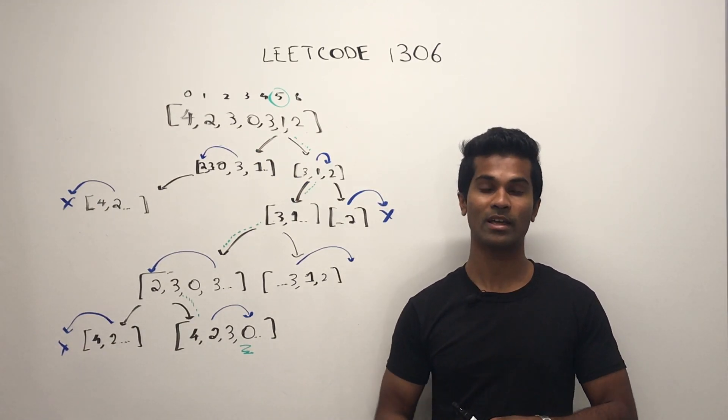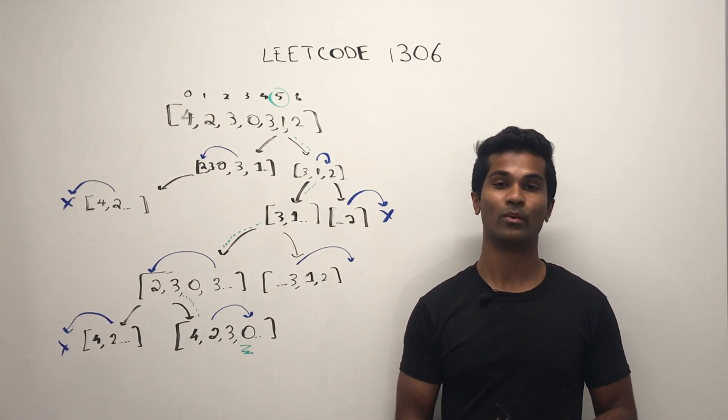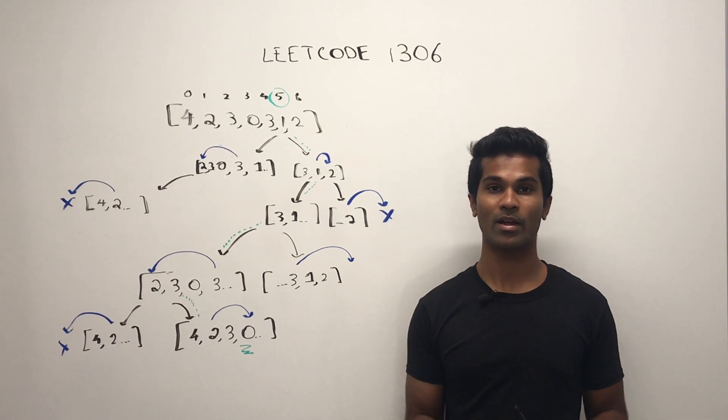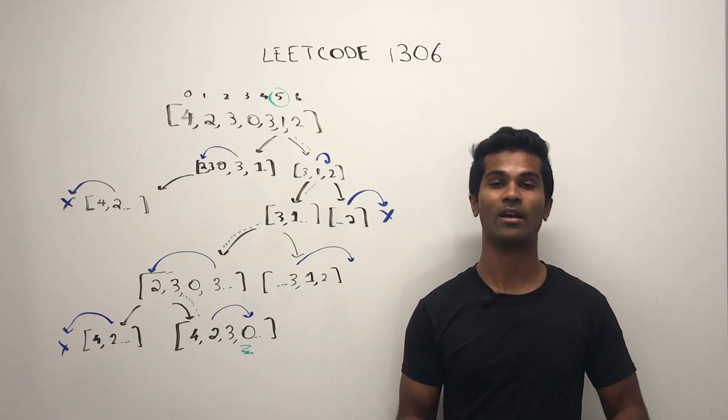If we check every single spot in the array and we haven't found zero, meaning we don't return true, we should probably just cut that tree right there and return false.